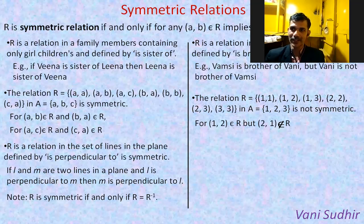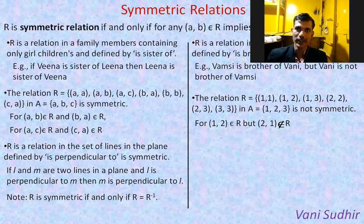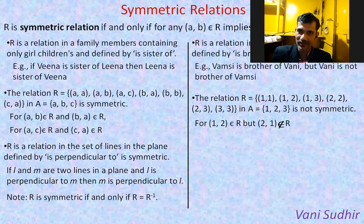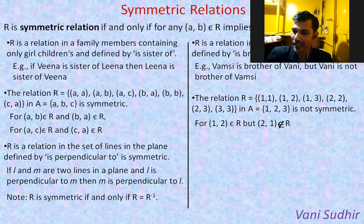Here is one trick to identify whether a set of ordered pairs is symmetric or not: find R inverse. R inverse is found by simply interchanging the X and Y coordinates. If R and R inverse are equal, then it is a symmetric relation.